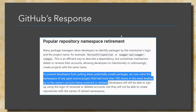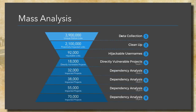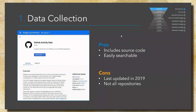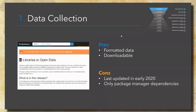We wanted to know just how widespread this vulnerability was, so we did some mass analysis. I'll walk you through the steps to scan all open source projects. Step one: data collection. We used two datasets. Dataset one: the GitHub activity data — a three-terabyte dataset published by GitHub that includes raw source code for many repositories, last updated in 2019. This lets us search for GitHub links and find outdated ones. Dataset two: the libraries.io open data — a graph database of open source dependencies maintained by the same people behind Unseen Infrastructure, which allows us to do reverse dependency analysis.